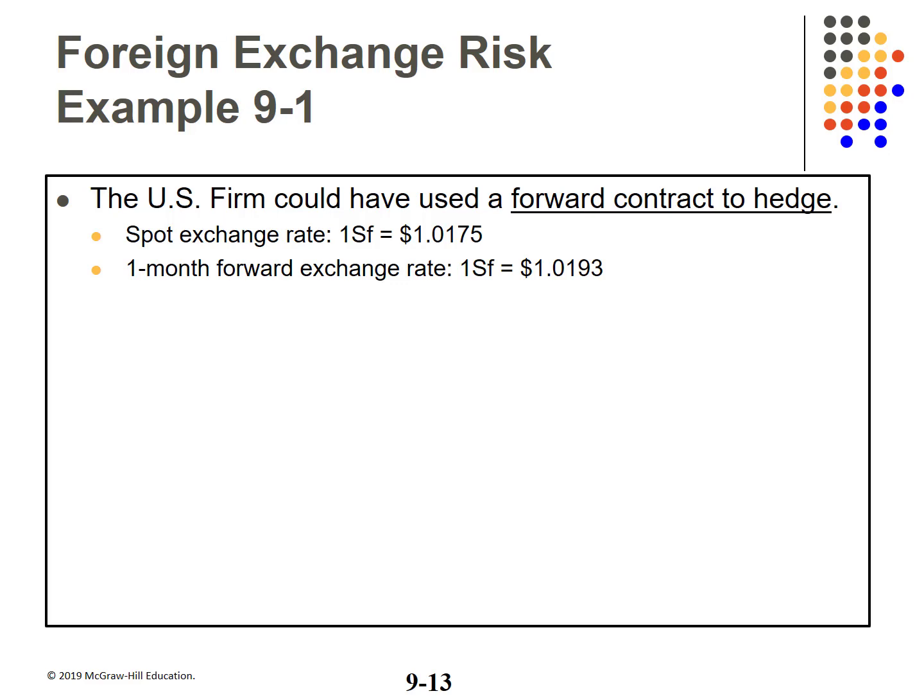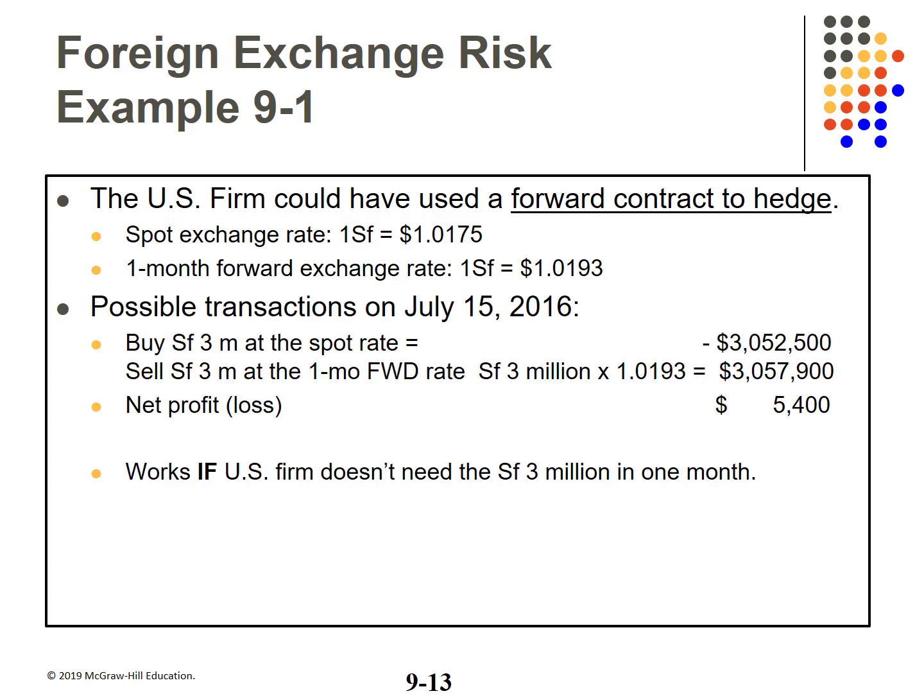The US firm could have used a forward contract to hedge. The spot rate was one Swiss franc to $1.0175; the one-month forward rate was one Swiss franc to $1.0193. Suppose on July 15, they bought 3 million Swiss francs at the spot rate ($3,052,500) and sold 3 million Swiss francs at the one-month forward rate ($3,057,900). Net profit: $5,400. This only works if the US firm doesn't need the 3 million Swiss francs in one month.